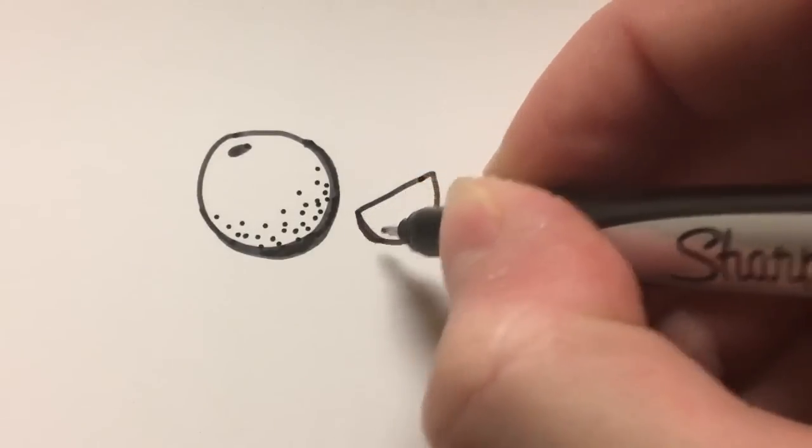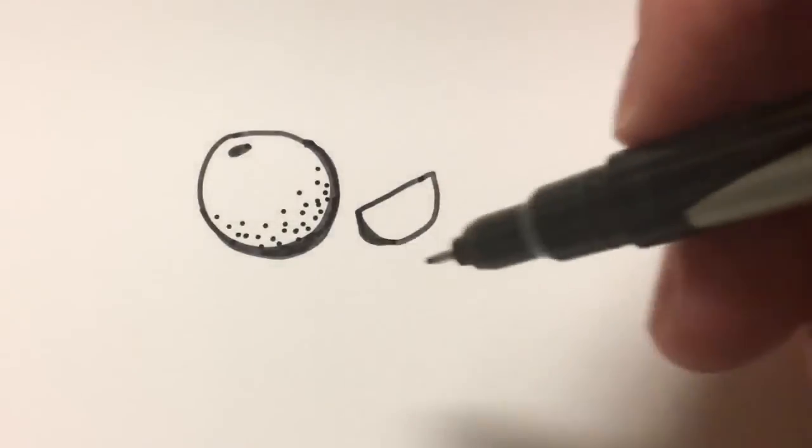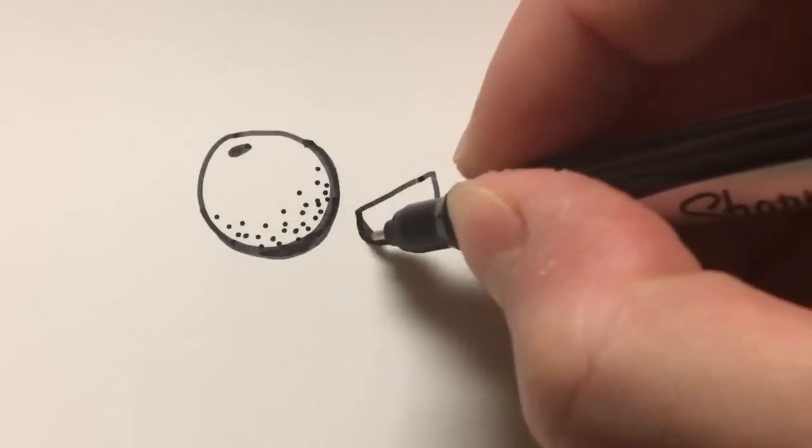Then I'll add a little bit of thickness over by the beginning, just to make it look like it has a slice dimension to it.